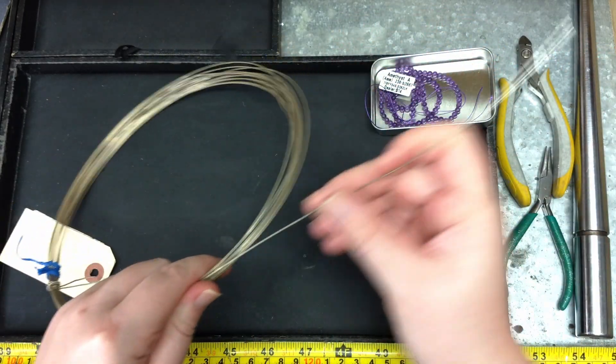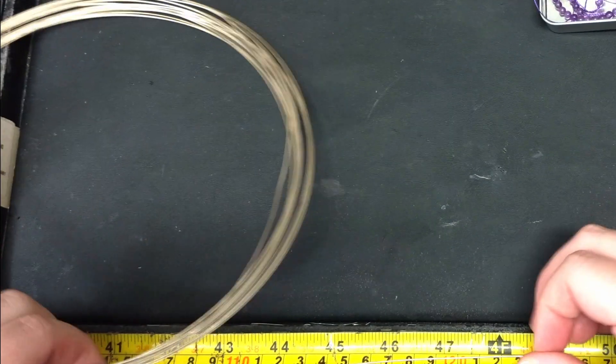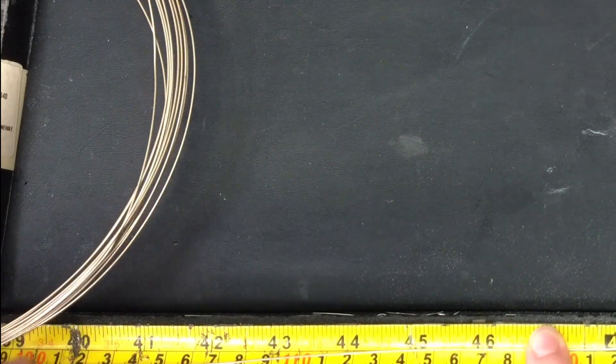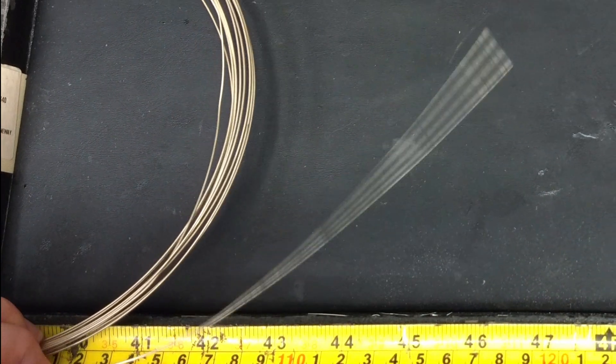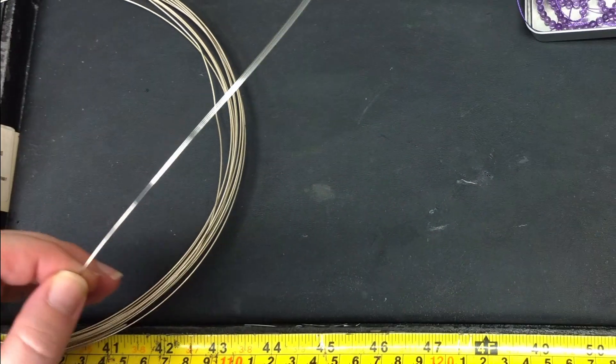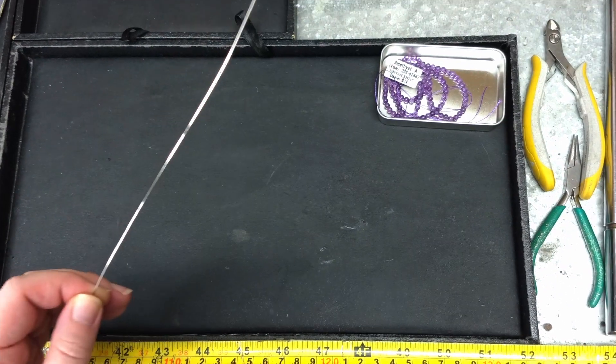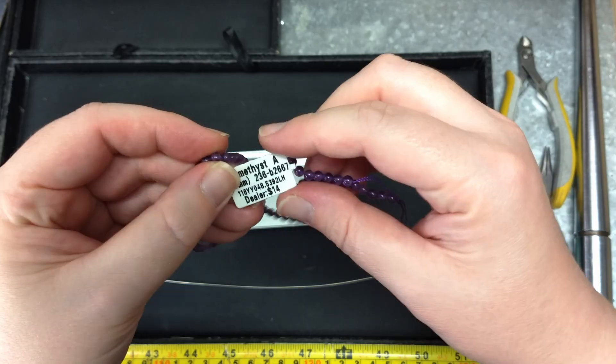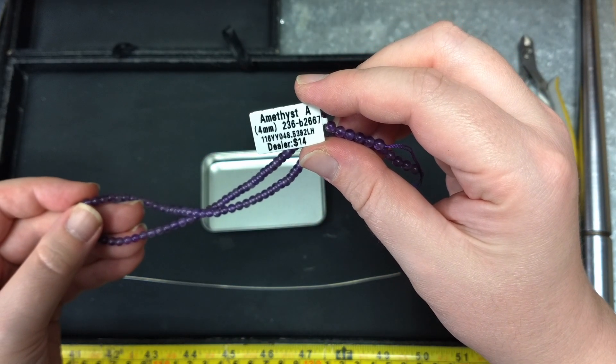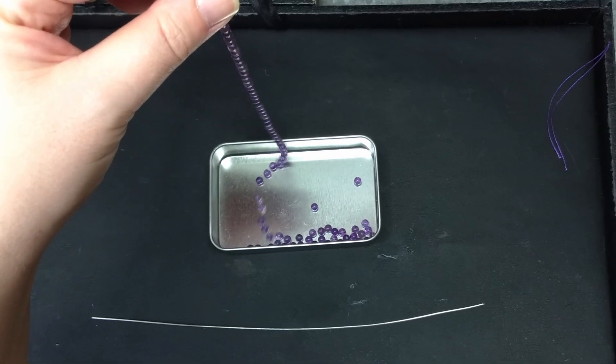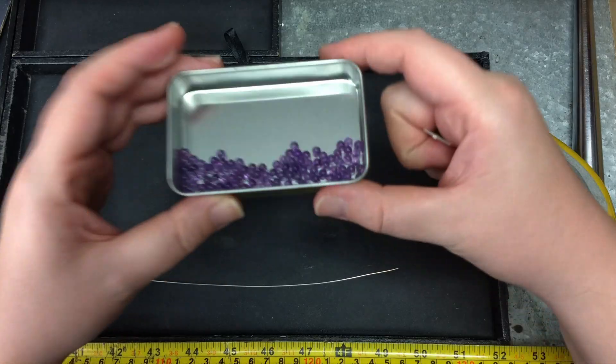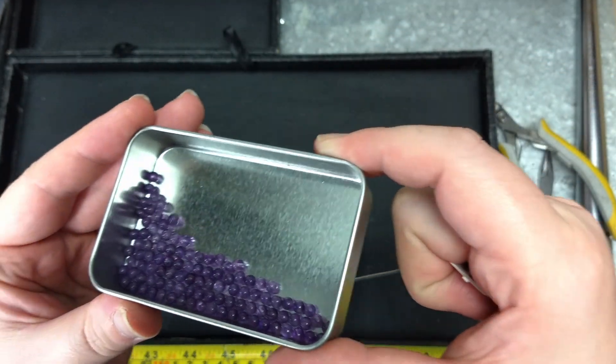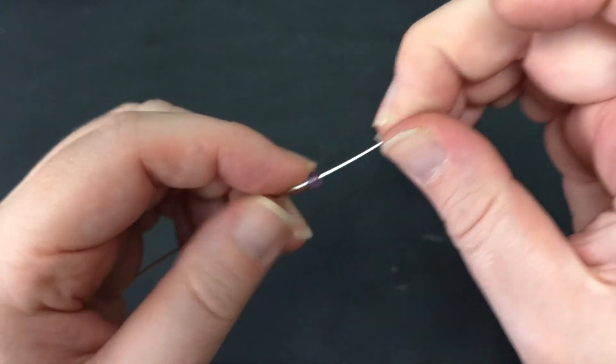To get started cut about 7 inches of 20 gauge wire. Use whatever round bead you would like. This ring would look great with any bead 4-6 mm in diameter. Now thread the bead onto the middle of the 20 gauge wire.